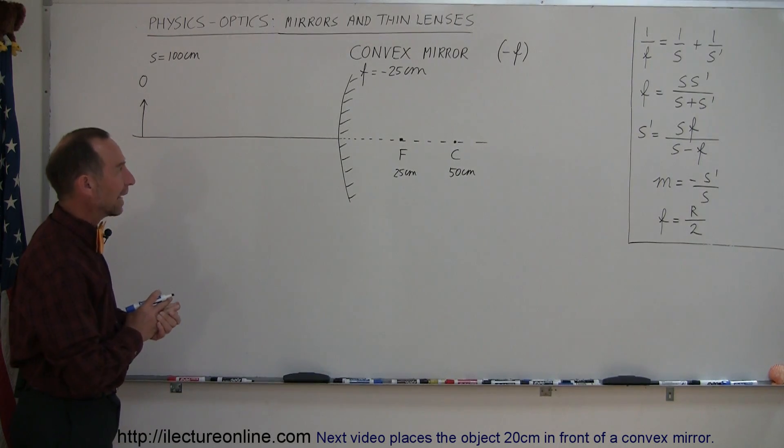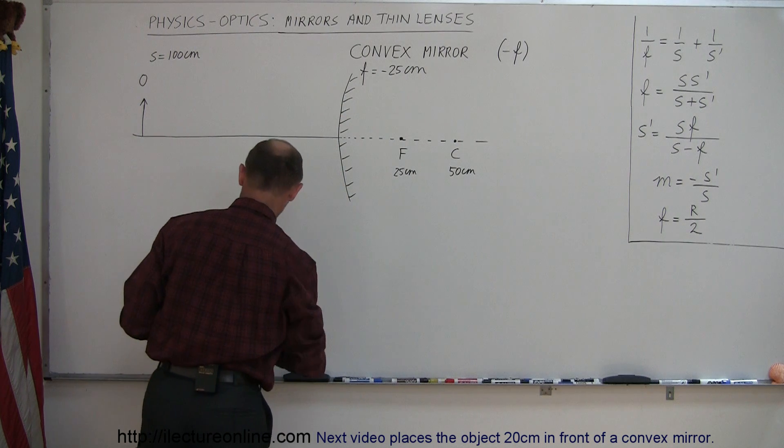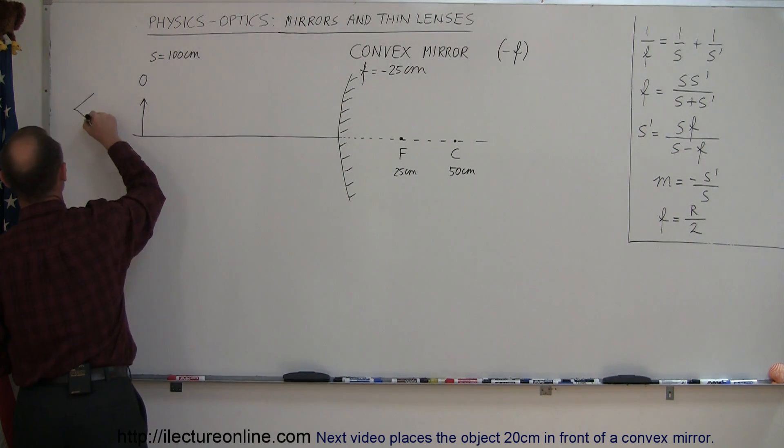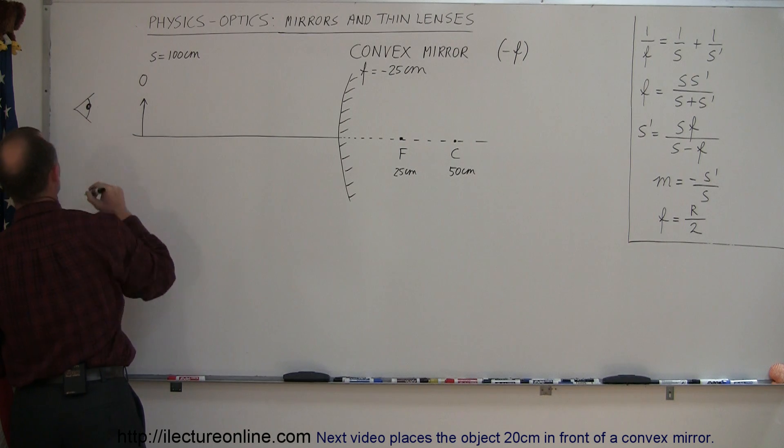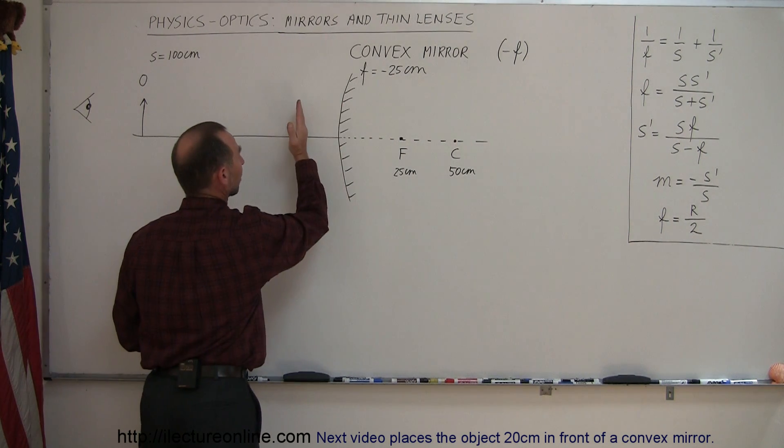Our next example here is a convex mirror, which means the mirror now bulges towards the observer. So let's draw an eyeball here representing the observer looking at this. That's the back of the mirror, this is the front of the mirror.